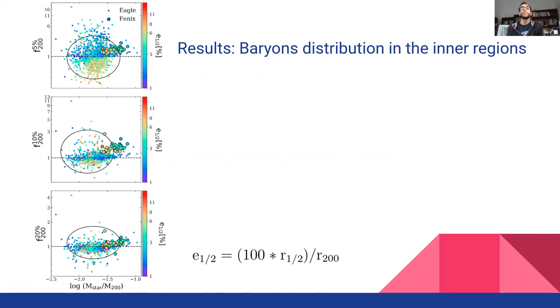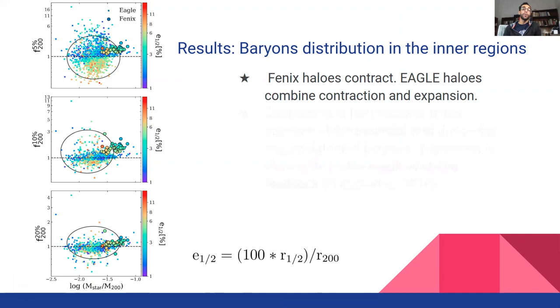Our research shows that Phoenix halos only contract, while for the Eagle halos can contract or expand in hydro compared to the dark matter only simulation.